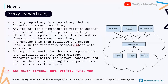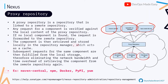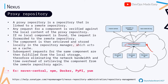A proxy repository is like a link to a remote repository — such as Maven Central or Docker Hub. If a developer residing inside the company's network needs to access external dependencies, they go through a proxy repository like Nexus or JFrog. Through the proxy, dependencies are fetched from the central repositories.